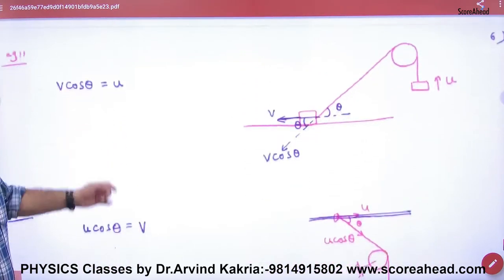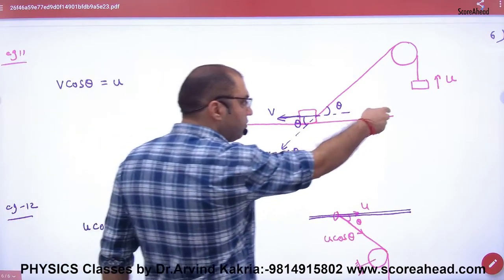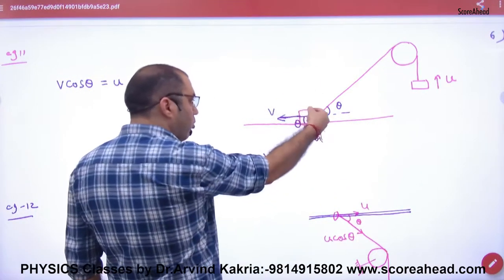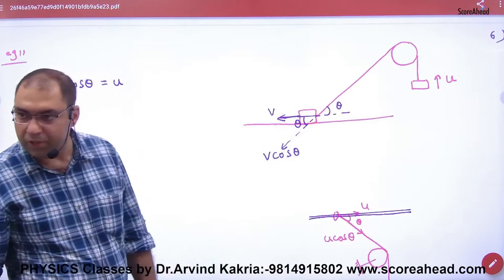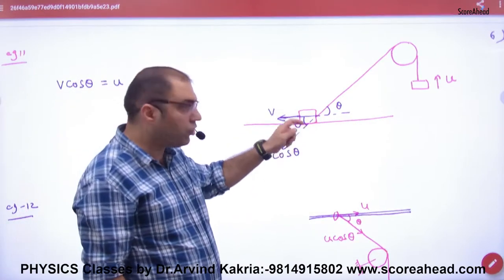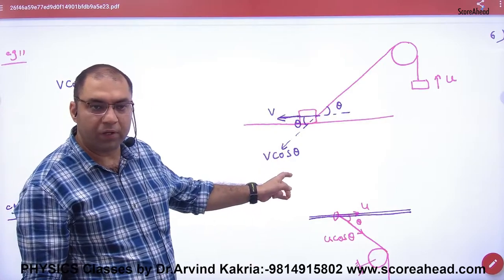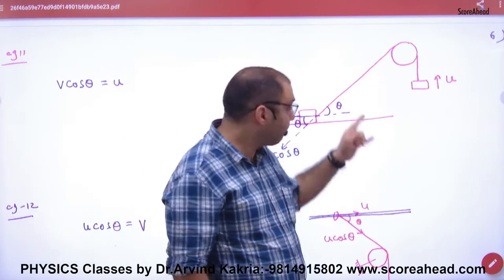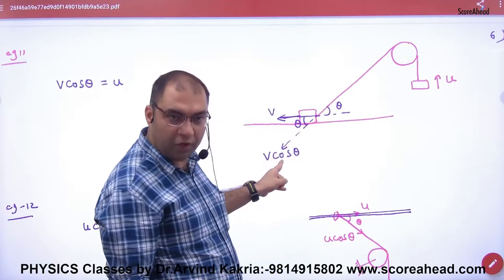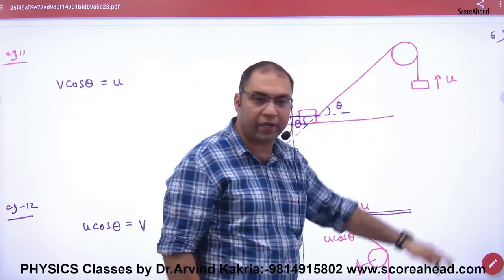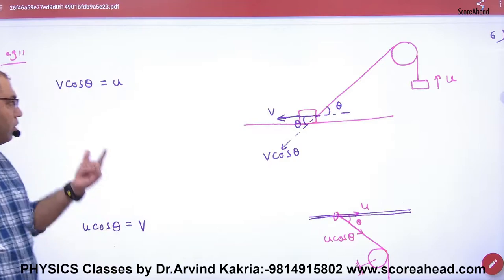Then there is this, velocity of u is this block here, so velocity of v. So if the angle is theta, so what will be the velocity of v? Cos theta. So what will be the velocity of the string of u? The velocity of the string of v cos theta is equal to u. So v cos theta is equal to u, answer.